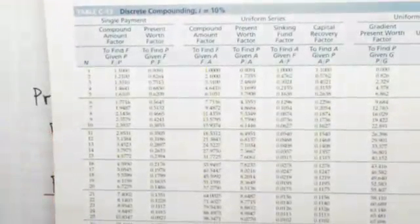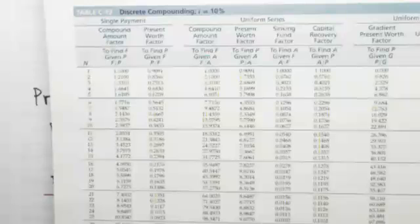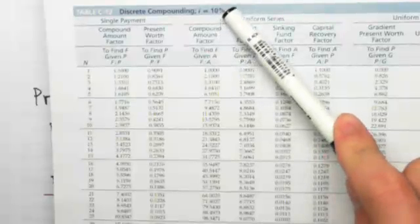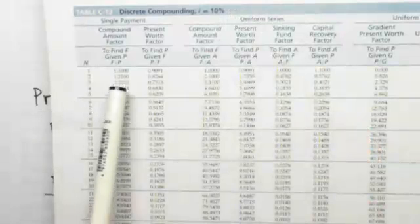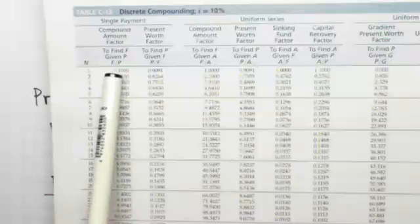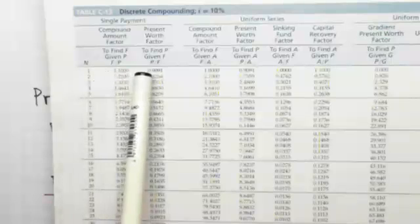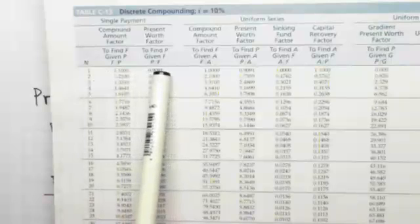This is what the table will look like. Here we have our interest rate, here we have our N, and here on the first column is F slash P, so this means finding F given P. The next column is P slash F, meaning finding P given F.